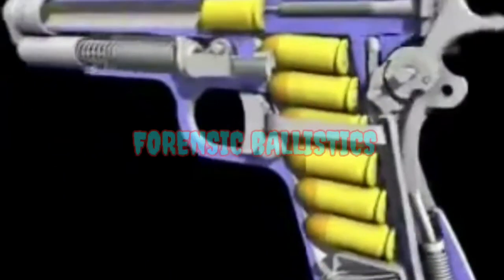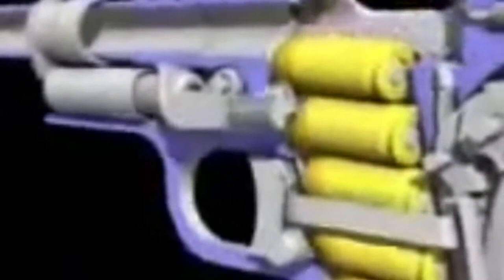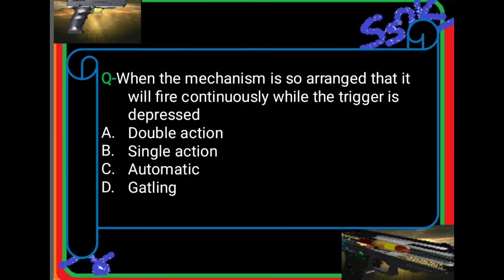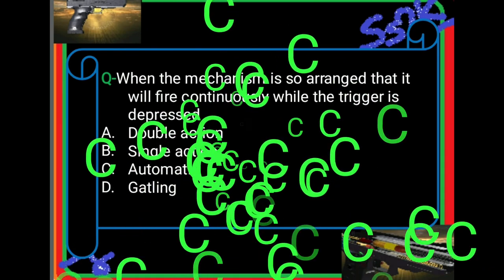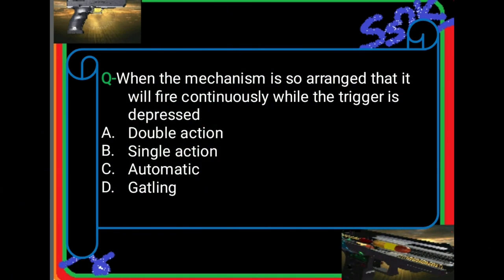This is Part 6 of the subject Forensic Ballistics. The first question: when a mechanism is so arranged that it will fire continuously while the trigger is depressed, then such is called — the answer is automatic firearm or automatic mechanism. When you depress the trigger continuously, it will continuously fire — that is called automatic.